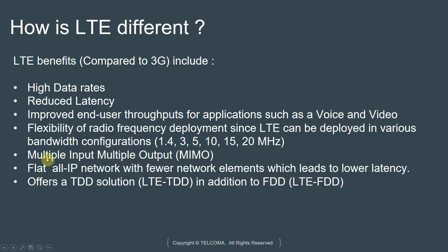LTE was the first network technology that had support for multiple-input multiple-output (MIMO) right from the initial deployments. MIMO provides significant capacity improvements in a network. LTE was also the first flat all-IP network with fewer network elements, which leads to lower latency. When 4G was being designed, they wanted to make the network architecture as distributed as possible, rather than centralized as in 3G, to provide low latency so that not all control and user plane traffic would go through one single central agent. By distributing it, you reduce latency and provide a better user experience.